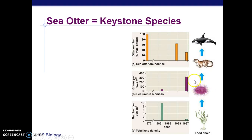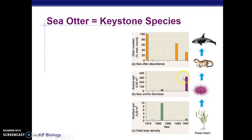If the sea urchin population grows out of control, the kelp get completely destroyed. Kelp are really important because they perform photosynthesis and provide all the food for the community. Looking at the graphs, there was a period when the whale population spiked, causing sea otter abundance to nearly be eliminated. This caused a spike in sea urchins, which caused an extreme decrease in kelp, making the community very unstable since kelp are the producers responsible for all the food in the ocean community.